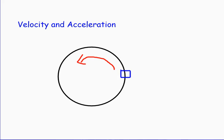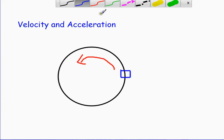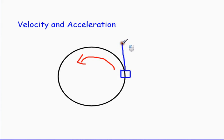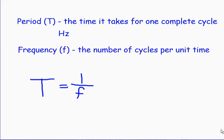Here we have an object — the blue rectangle — moving in a circular path along the black circle in the direction of the red arrow. The velocity of this object is going to be tangent to the circle, so velocities of an object moving in a circle are always tangent to the circle at that point. Acceleration is going to be inward. The velocity of the object is going to be changing even if the speed remains constant, because the direction of the object's motion is changing. In order for this direction to change, the acceleration must be inward.